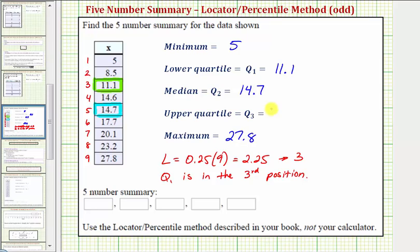Now we'll find the locator for Q3 by using the formula L equals 0.75 times 9. So 0.75 times 9 is equal to 6.75. We have a decimal, so we round up to the next whole number, which would be 7, which means Q3 is in the 7th position.